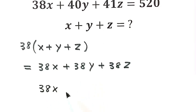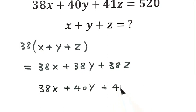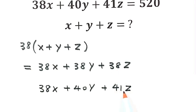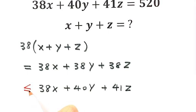For 38y, I'm going to put 40y. Then for 38z, I'm going to put 41z. So you can see the coefficients are increasing: from 38 to 40, and from 38 to 41. Because x, y, z are positive integers, this expression is getting bigger, so we have a less than or equal to relationship.